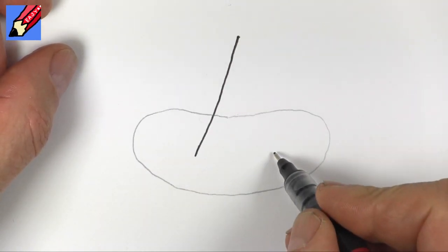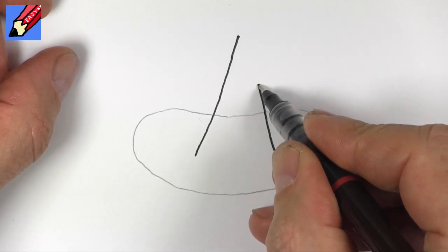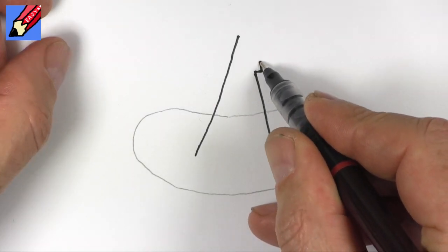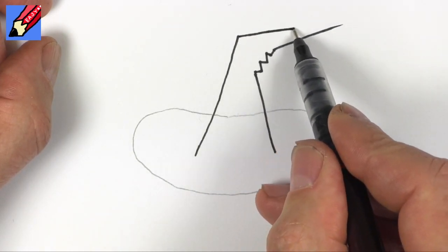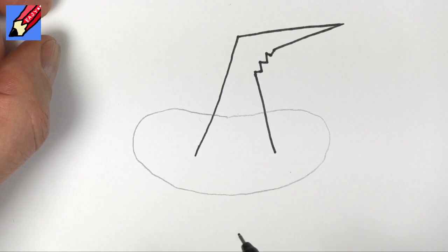In a pointy kind of way. Then from the side here go up but not all the way and then you want to do a zigzag, zigzag, and then point sideways like that and sideways like that.